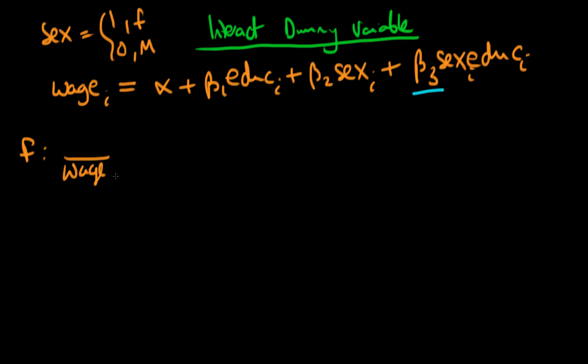So the average wage rate for a female, if they had a given number of years of education, would be alpha plus beta one times the number of years of education which they had. Plus, well this sex variable now takes on the value of one, so I've just got plus beta two. And now our sex variable here is taking on a value of one as well, so I've got plus beta three times the number of years of education.